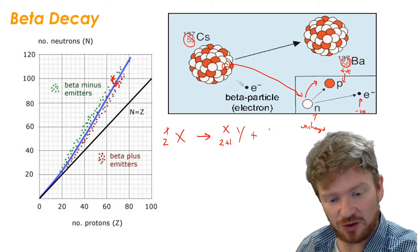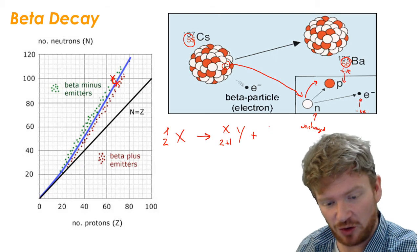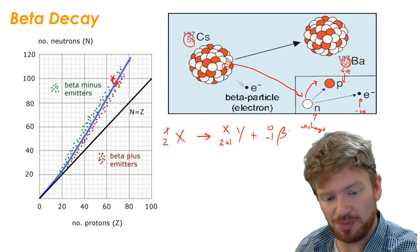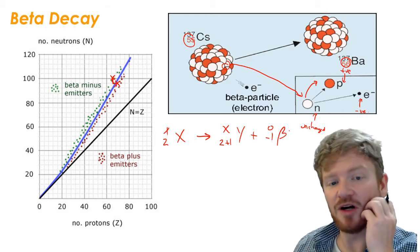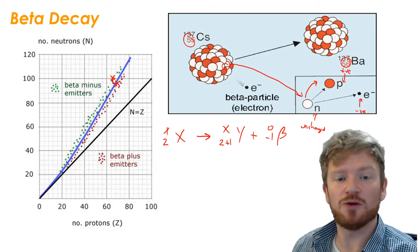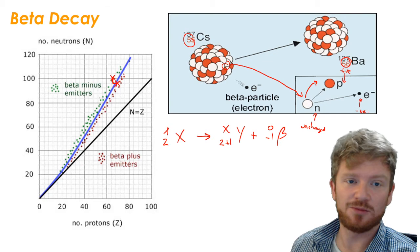Plus, and there's lots of different ways you can write it. Often, you write it as 0 minus 1 beta. Because a beta particle, it's like the opposite of being a proton. It's like it has a negative 1 proton number.